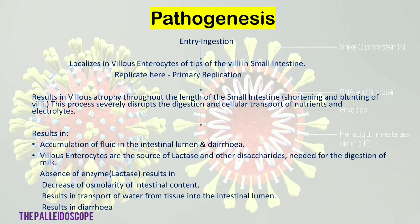Since the villi have atrophied, absorption decreases, severely disrupting digestion and cellular transport of nutrients and electrolytes. This results in accumulation of fluid in the intestinal lumen and diarrhea. Villus enterocytes are the source of lactase and other disaccharidases needed for digestion of milk. Absence of the enzyme lactase results in decreased osmolarity of intestinal content, causing transport of water from tissue to the intestinal lumen and resulting in diarrhea and distended stomach.